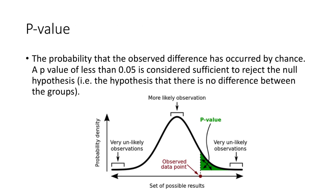The p-value is essentially the probability of an observed result assuming the null hypothesis is true.